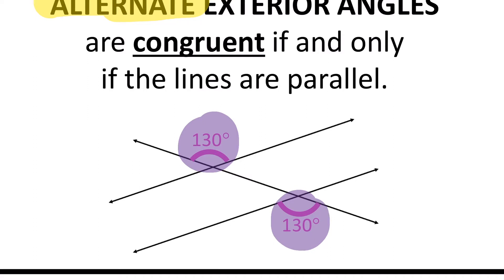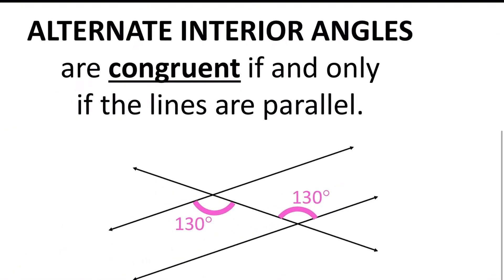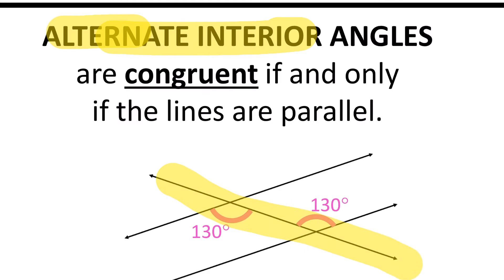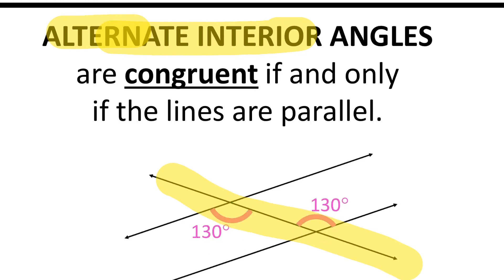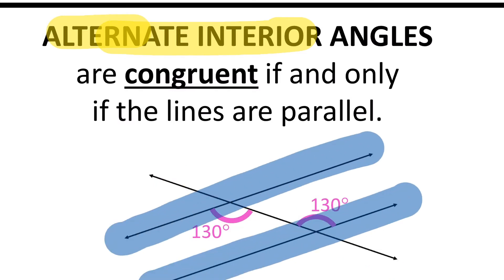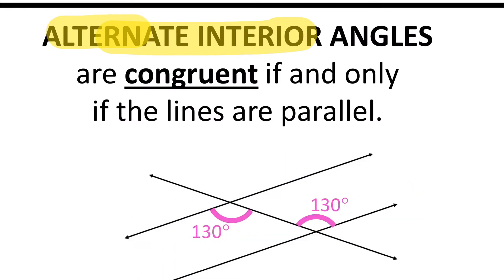The next relationship we are going to look at is alternate interior angles. Again, we have the word alternate. So if I look at my transversal, this angle is on the top of the transversal and this angle is on the bottom of the transversal — so they are alternate. We also call them interior, because if I look at my parallel lines, the angles are inside of the two parallel lines. So they are alternate interior angles. And as you can see in the picture, alternate interior angles are also congruent — this one is 130 degrees and this one is also 130 degrees.